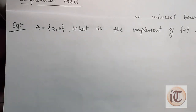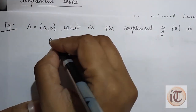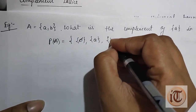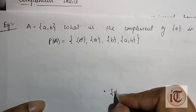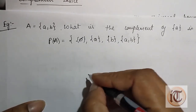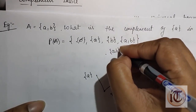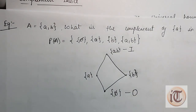Suppose we have a set A = {a, b} and we have to find the complement of element a in the power set of A. First we draw the Hasse diagram. The power set contains elements: φ, {a}, {b}, and {a, b}. φ is the least element represented by o, {a, b} is the greatest element represented by i, with {a} and {b} in between. This is the Hasse diagram of the bounded lattice.